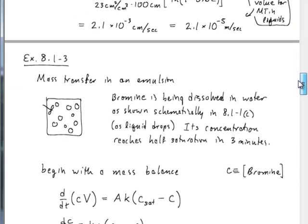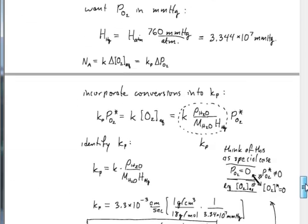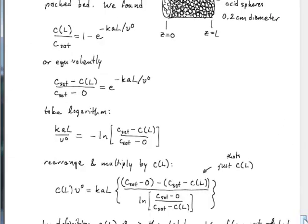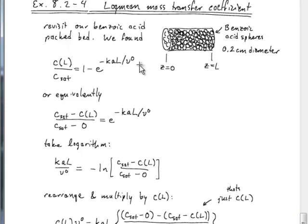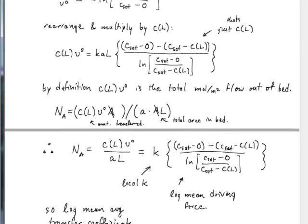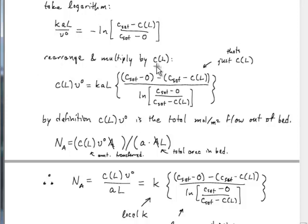That's another way we could define the relevant concentration difference for a mass transfer coefficient. Let me come down to the bottom of the notes. This is just rephrasing what we derived earlier. We can equivalently write that expression as (c_sat minus c_L) over (c_sat minus 0), which is just rewriting the 1 in that expression and moving things around. We take the logarithm on both sides and rearrange. Then we multiply by the exiting concentration at location L if the bed is length L long.